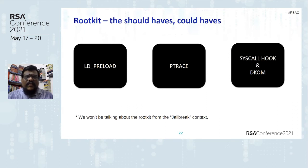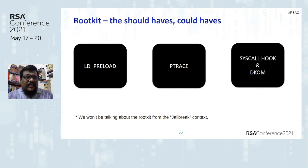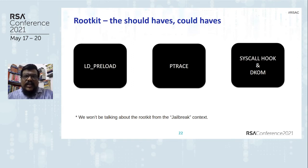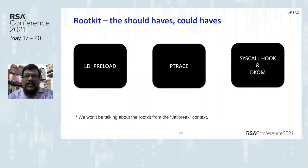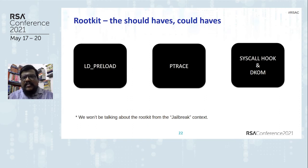We will cover both userland rootkit analysis and kernelland rootkit analysis. We'll see how to use the plugins to uncover LD preload hooks, ptrace-based rootkits, rootkits that work by hooking the syscall table, and powerful rootkits that directly manipulate kernel data structures — specifically the task_struct — to hide processes. We demonstrate process hiding and app hiding with five different techniques: LD preload, ptrace, syscall hook, and DKOM, then uncover them using memory forensics.